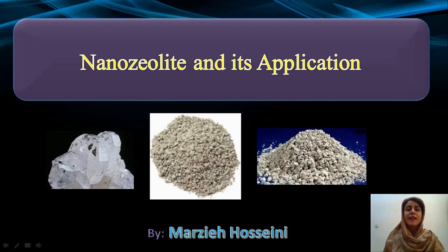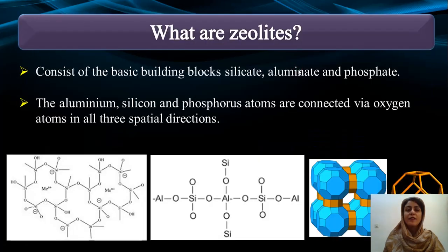Here you can see three different pictures of zeolites. What are zeolites? Zeolites consist of the basic building blocks of silicates, aluminates, and phosphates. The aluminum, silicon, and phosphorus atoms are connected via oxygen atoms in all three spatial directions.